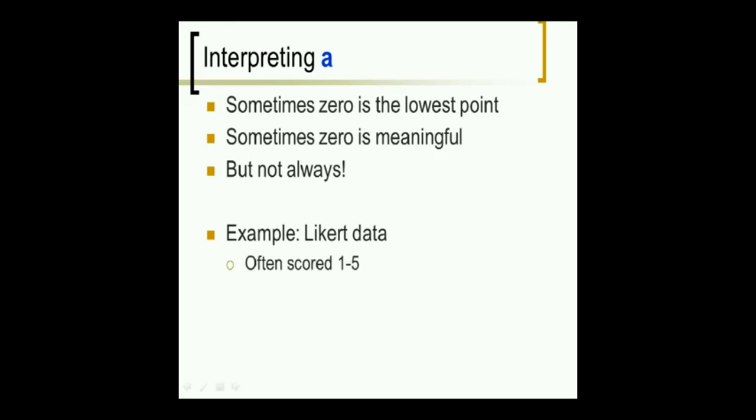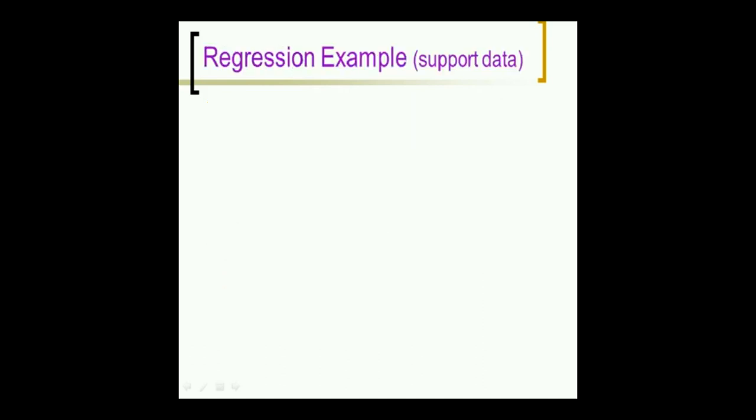For instance, consider Likert data. It's often scored one through five. One is strongly disagree. Two is disagree. Three is neutral. Four is agree. And five is strongly agree. There's no zero. So what does zero mean? It doesn't mean you disagree even more than strongly disagree. Likert scale data is a little sketchy in some ways anyway, so you don't want to extrapolate down to zero. So zero is not meaningful at all.